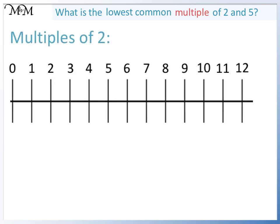The multiples of 2 are numbers in the 2 times table. The first few multiples are 2, 4, 6, 8, 10 and 12.